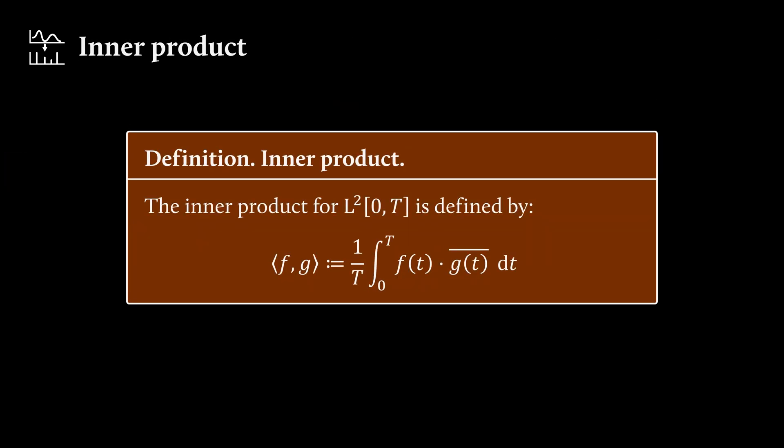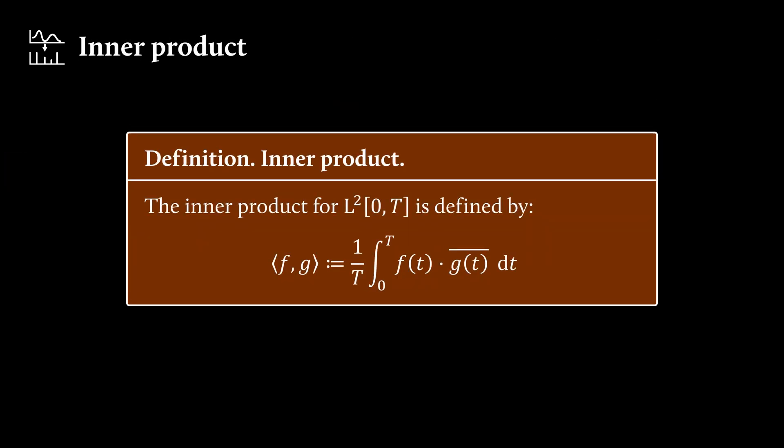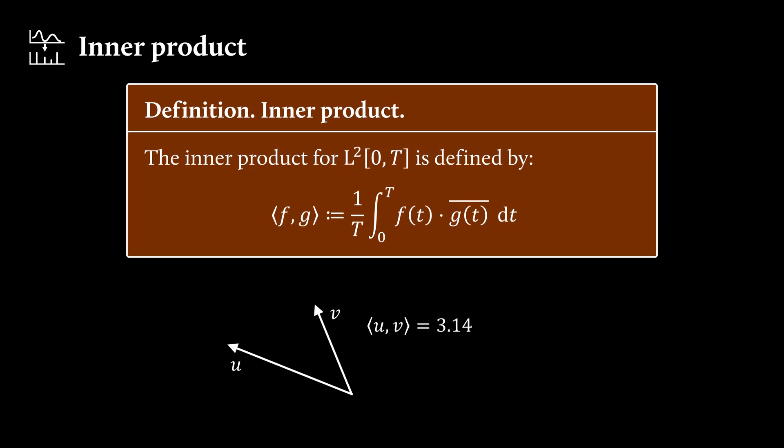And then we can define an inner product for that space. So our input are two functions and our inner product just means calculate the integral from zero to t of f of t times g of t, where we complex conjugate g of t.